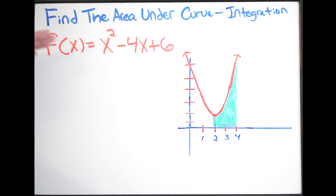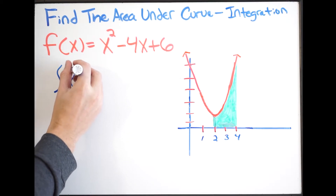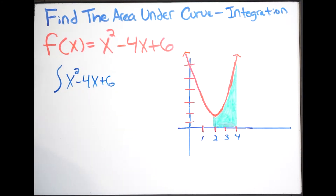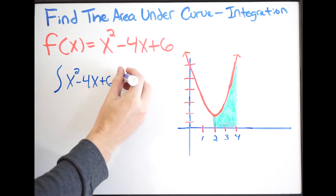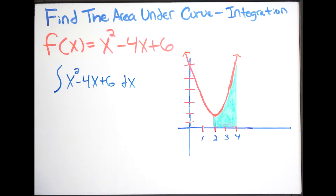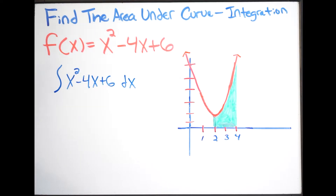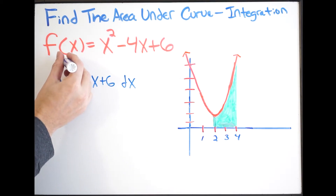Our first step is we need to integrate our function with respect to x. We have x squared minus 4x plus 6, and we want to integrate with respect to x. We want to find it on the interval from 2 to 4, looking at our graph. So our lower limit is 2 and our upper limit is 4.